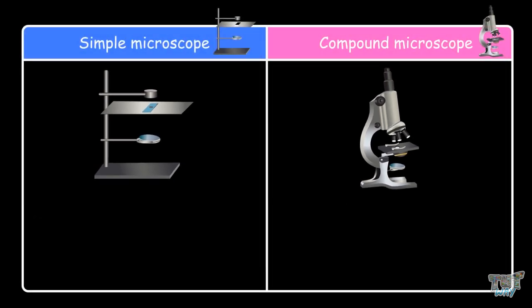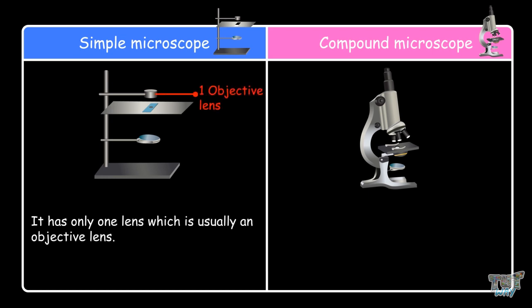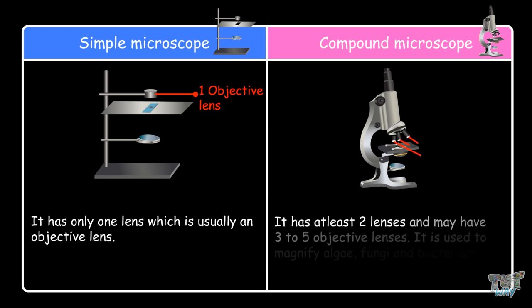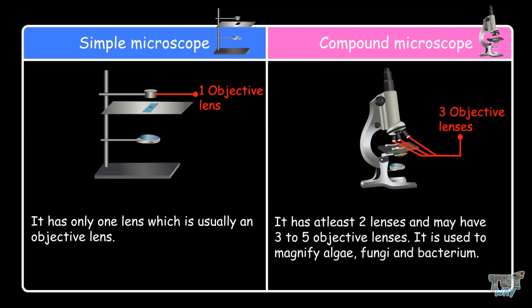The simple microscope only has one lens which is usually an objective lens. The compound microscope has at least two lenses and may have three to five objective lenses.